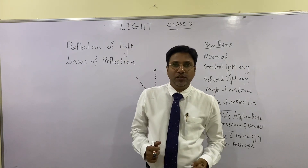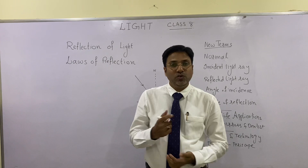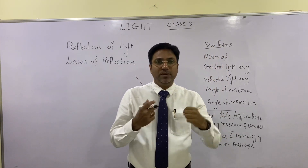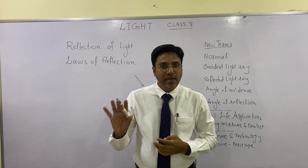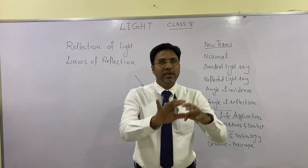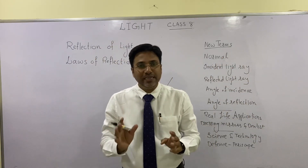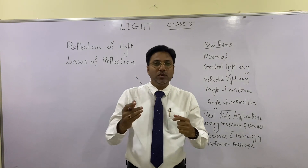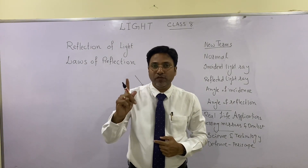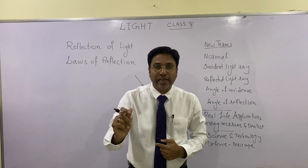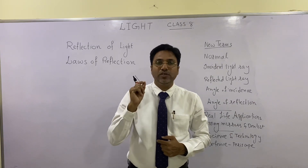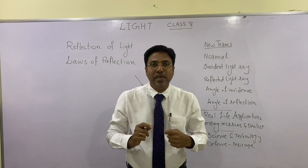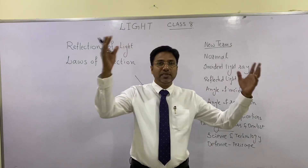I am visible to you — do you know why? Because of light. But can you see the air here? There is light passing through it, yet you can't see it. Do you know why you are able to see me? Because of one property of light called reflection. Because of reflection, you are able to see me and I am able to see you.